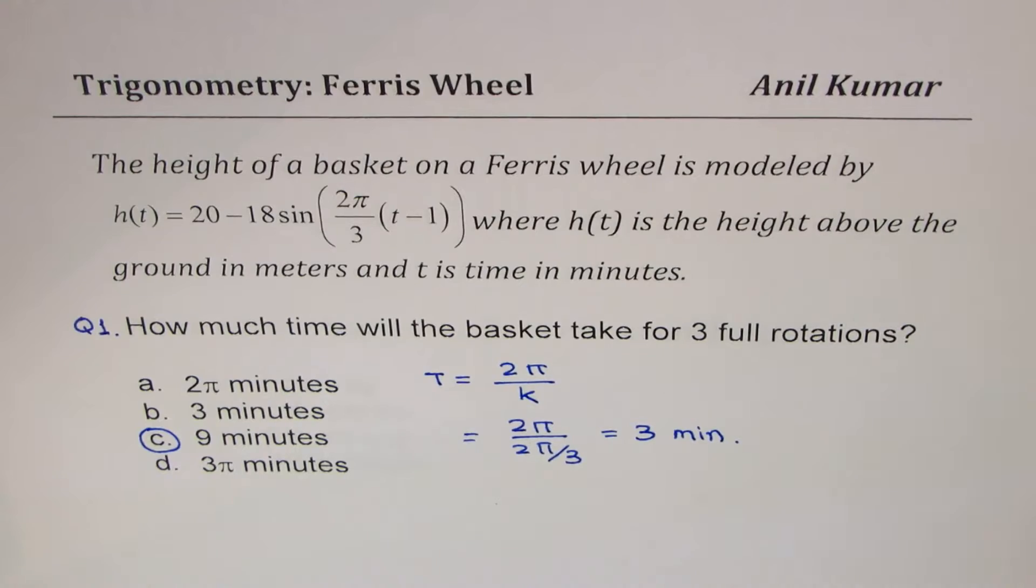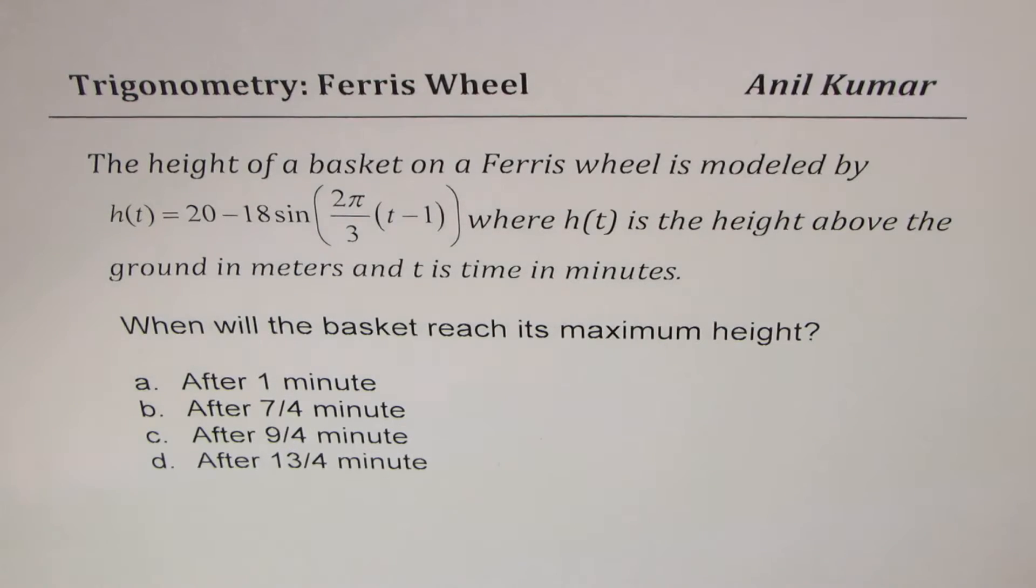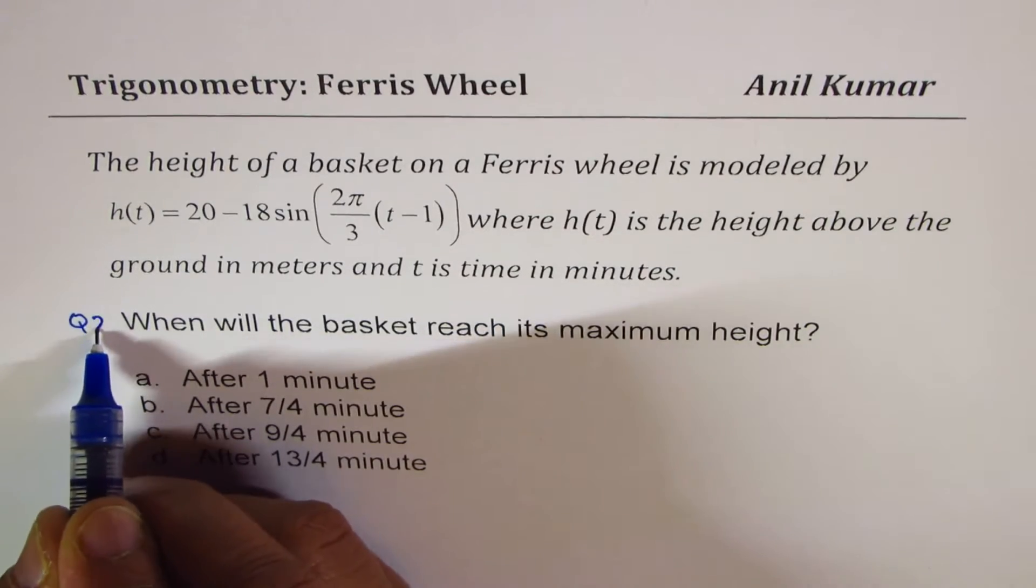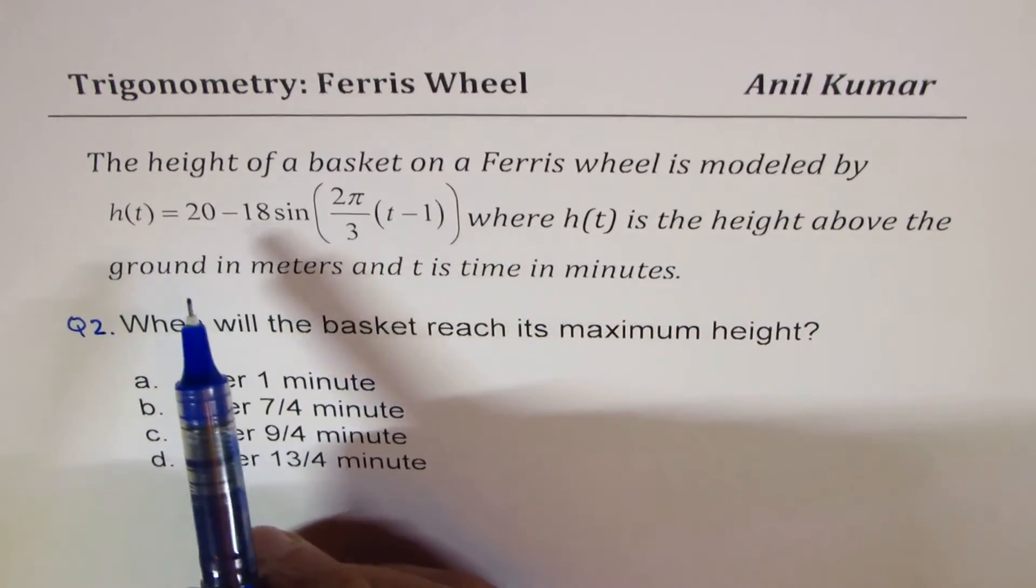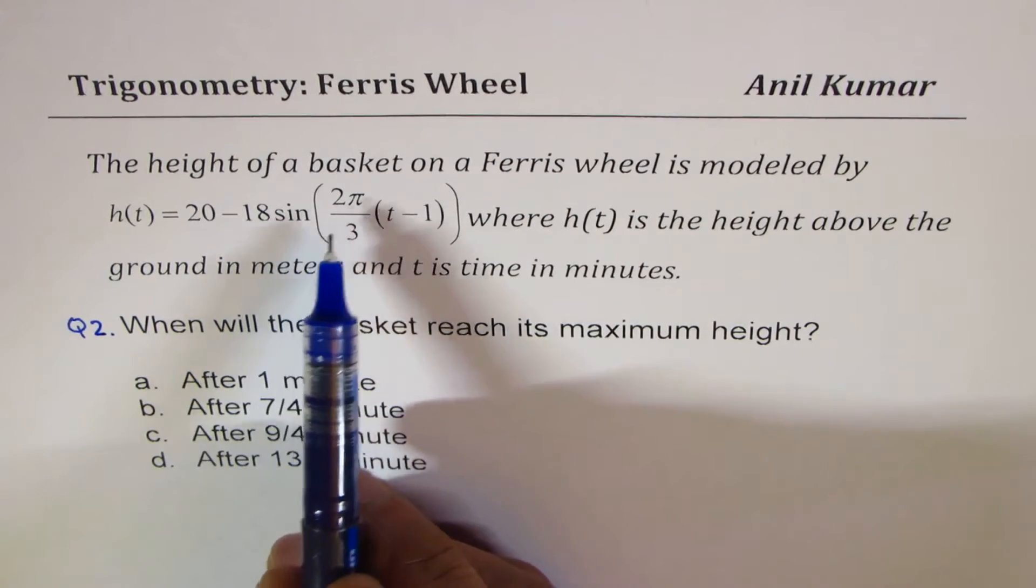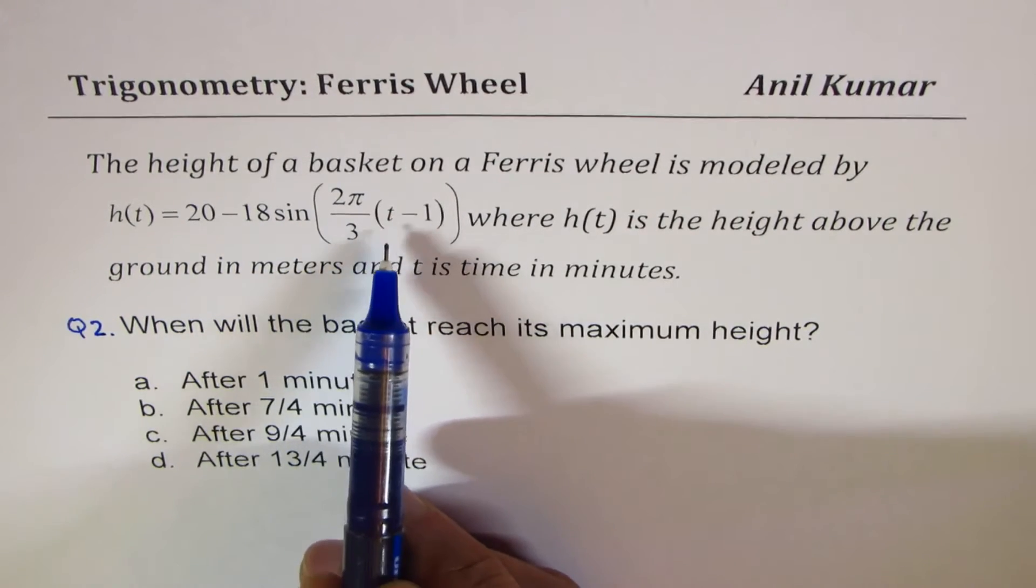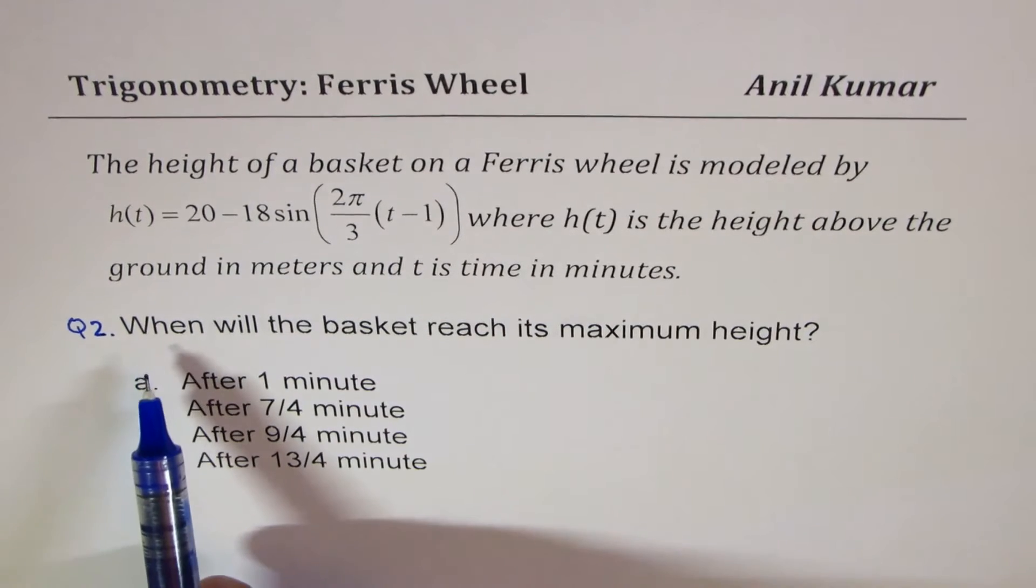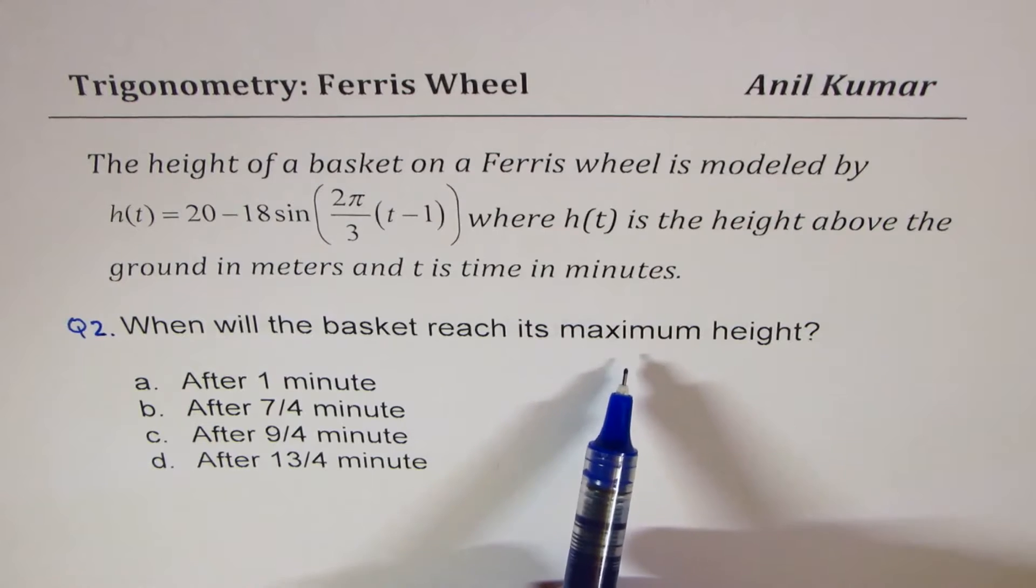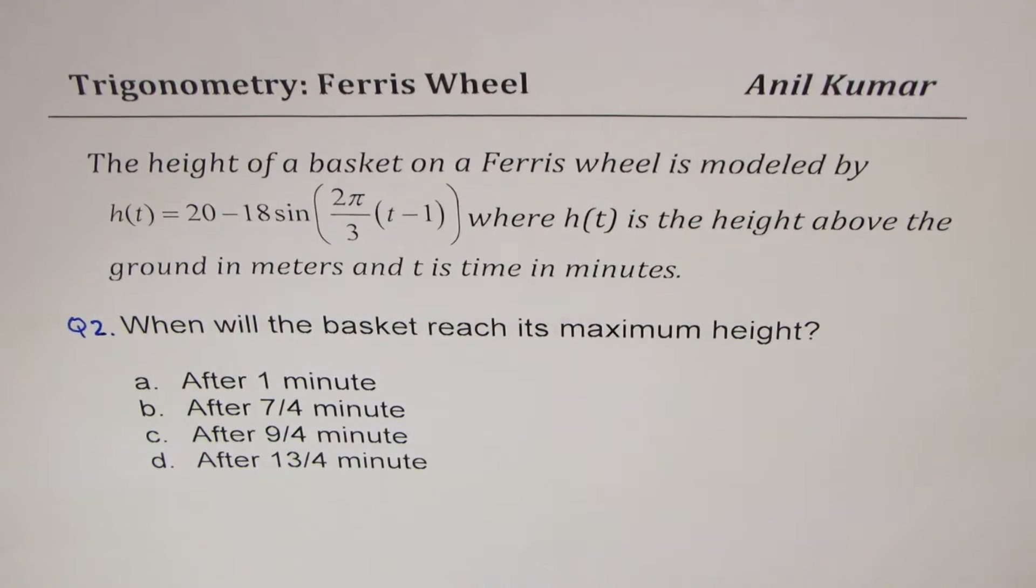Let's move on and see the next one. The top part is same. We are again talking about the same basket whose equation is given by h(t) = 20 - 18sin(2π/3(t-1)). The question now is when will the basket reach its maximum height? Now, this is very critical. I like you to pause the video, answer the question, and then look into my suggestions.